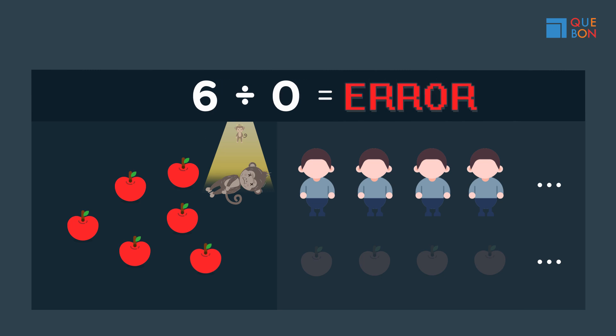So, this is called an error. If you see a problem like six divided by zero, you will now picture this poor little monkey who died after trying to share some apples.